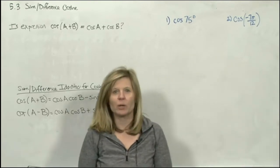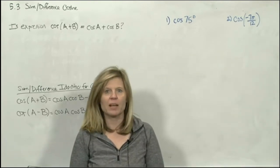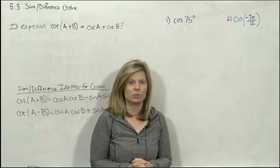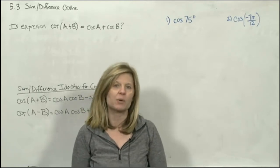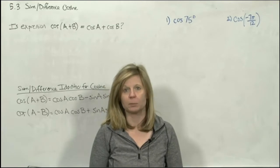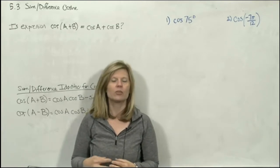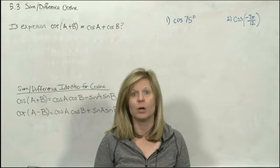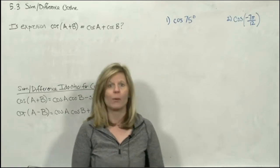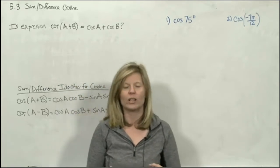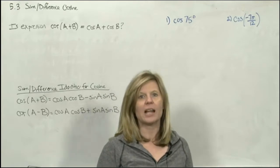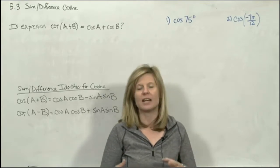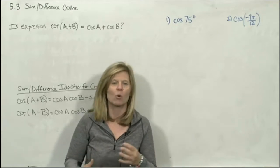Welcome back, everybody. We have just spent two videos looking at our fundamental identities, which are our 11 basic identities that we could replace trig expressions with. We saw how we could use these identities to evaluate a trig function value without drawing the right triangle — how we can do it algebraically by solving an equation. And we've also seen how we can simplify trig expressions by using identities, by substituting and then following our order of operations.